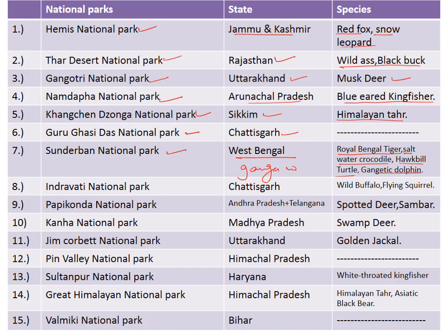Next is Indravati National Park, situated in the state of Chhattisgarh, famous for the wild buffalo and the flying squirrel. One important thing to note is that the wild buffalo is the state animal of Chhattisgarh.